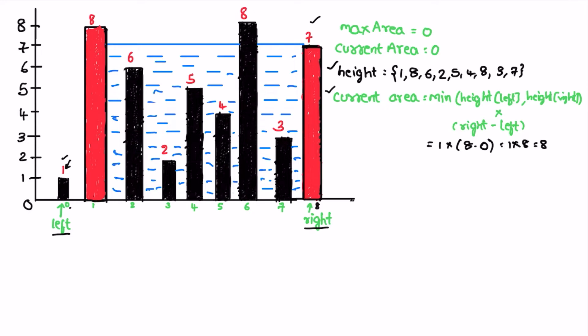Max area will be the max of current area or max area. Current area is 8, so max is also 8. This iteration will happen until left is less than right — until these two pointers intersect. To proceed to the next iteration, we either have to move left or right. We pick the minimum of both: since the minimum is 1 at left, we increment left by one.